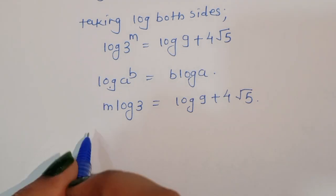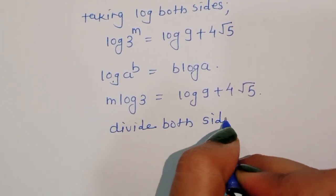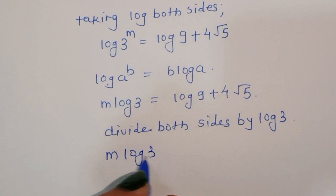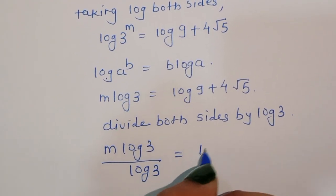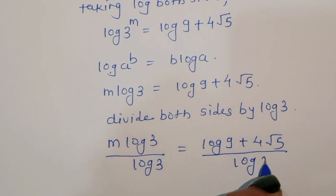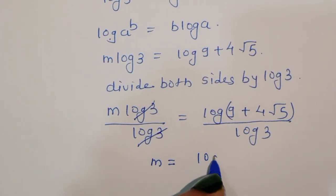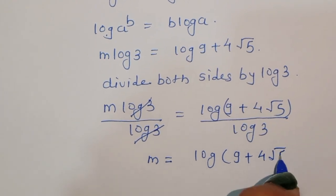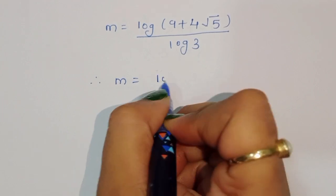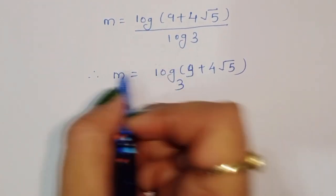Using the log formula — log of a power m equals m log of a — we get m log 3 is equal to log of 9 plus 4 square root of 5. Now dividing both sides by log 3, the log 3 cancels on the left. So m is equal to log of 9 plus 4 square root of 5, divided by log 3, which we write as log base 3 of 9 plus 4 square root of 5.